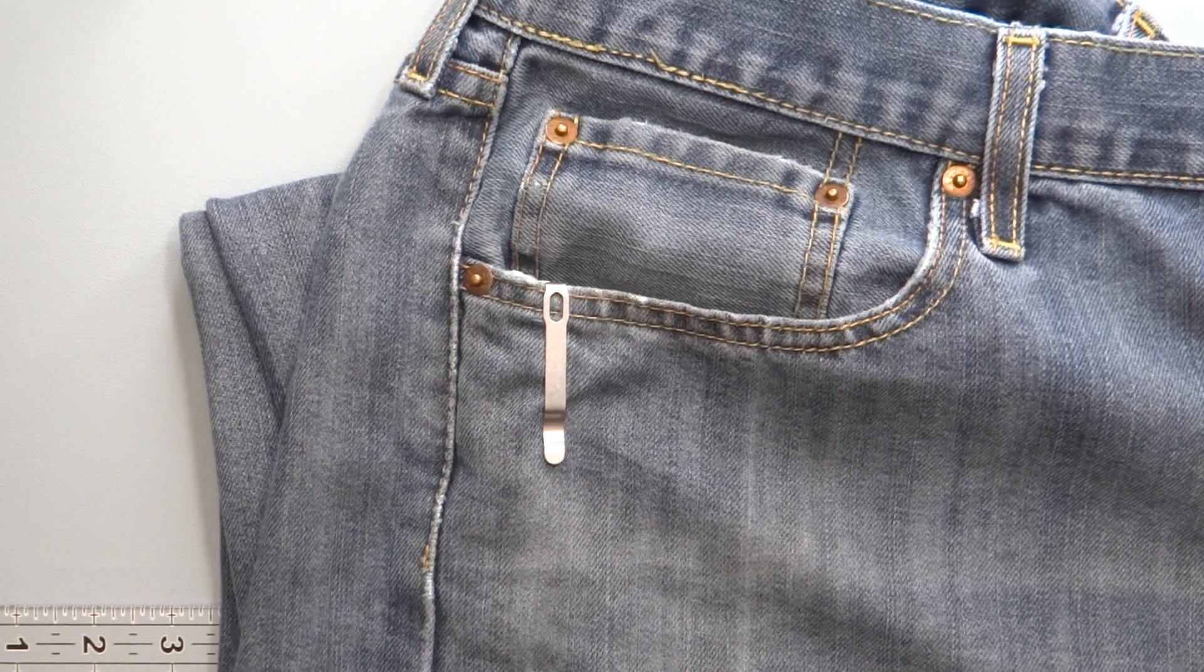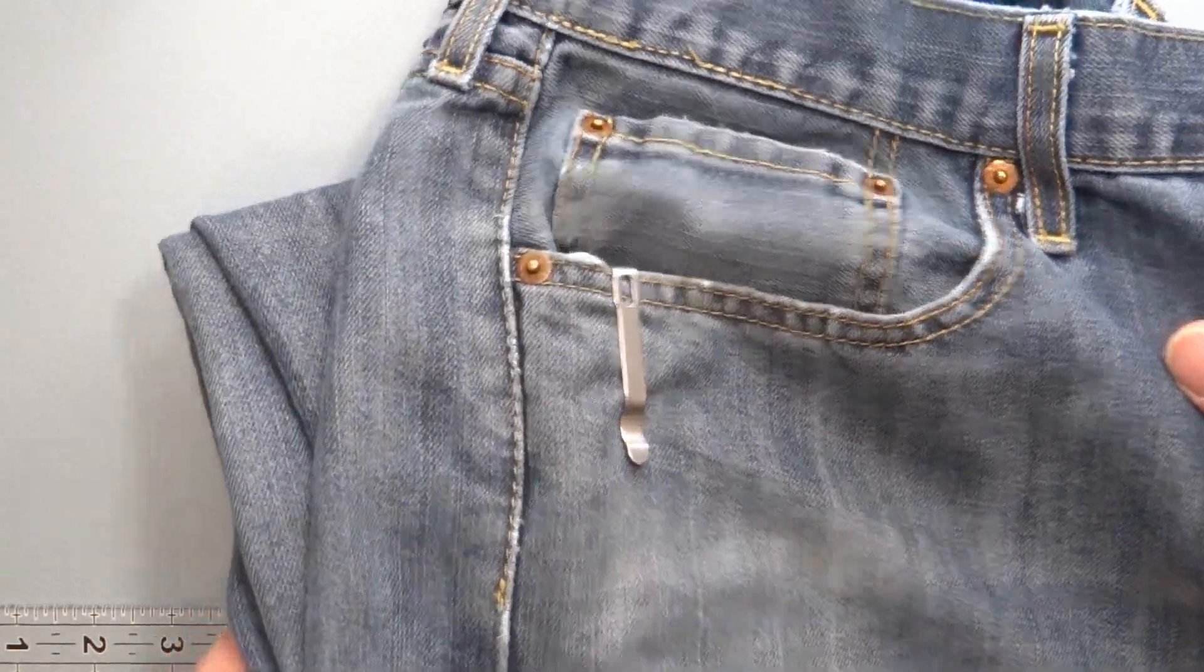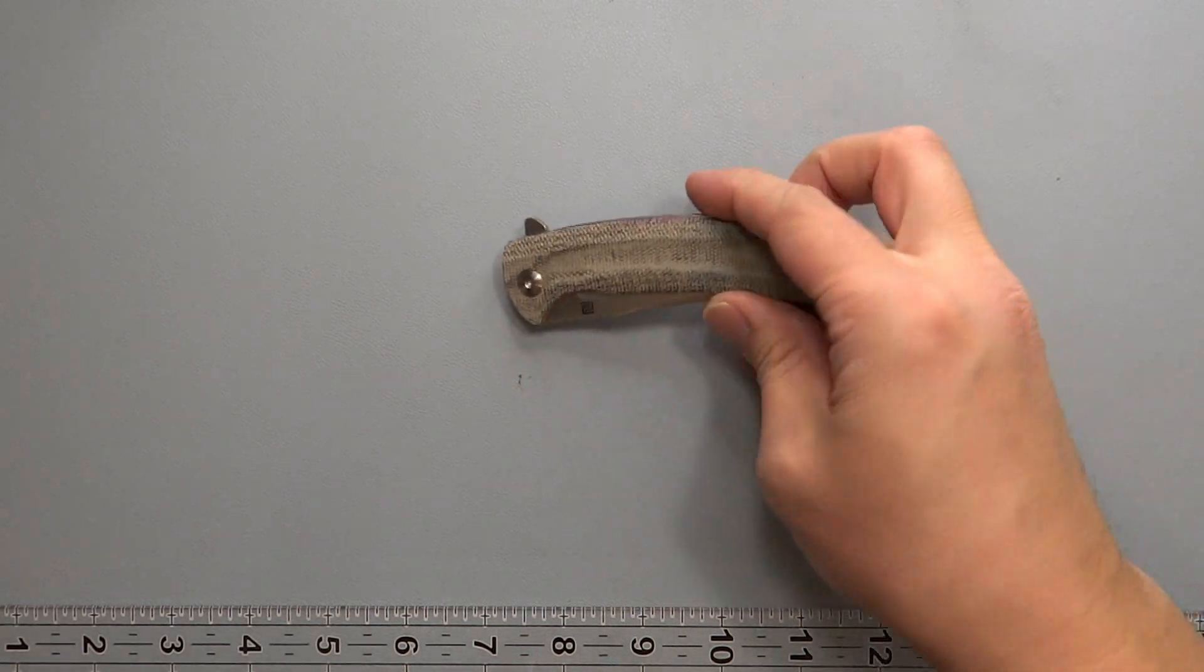This one's the Arroyo, so that's going to be their knife here. This one is going to be in a micarta scale. It's kind of a newer setup for them.